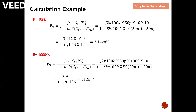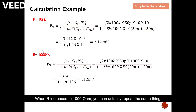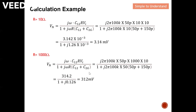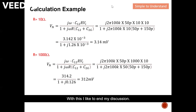Punching this into the calculator, the noise induced from conductor 1 to conductor 2 is 3.14 millivolts. When R increases to 1000 ohms, repeating the same calculation shows that the induced noise increases. In short, the larger the termination resistance R, the more noise will be induced on conductor 2.